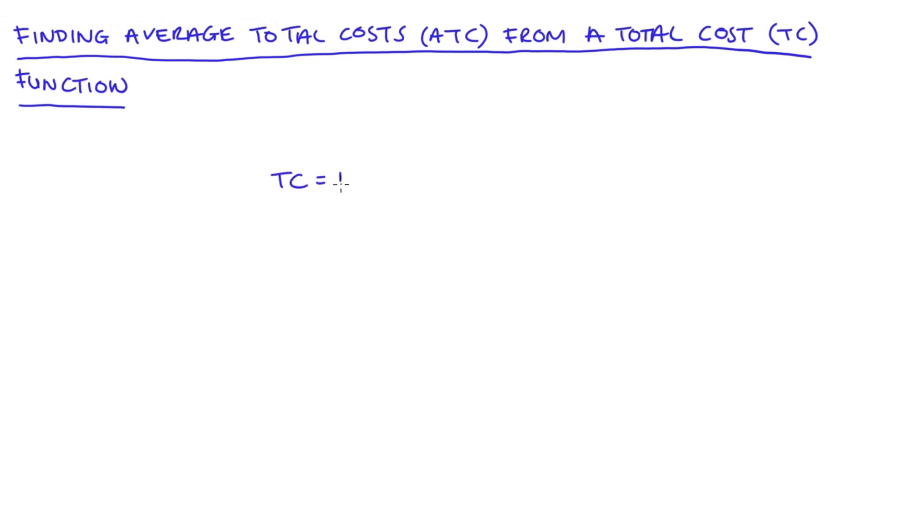Now in my example I'm going to use the total cost function equal to 1250 plus 3q squared plus 50q.